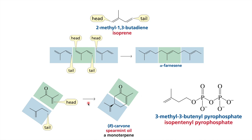When there are cyclic terpenes or terpenoids, the head portion combines with the tail portion of another isoprene unit, and then a joining of carbons occurs to give formation of a cycle. In cycle formation, there is no strict requirement that only head-to-tail combination occurs — any reactive carbon can attack another reactive carbon to give a cycle.